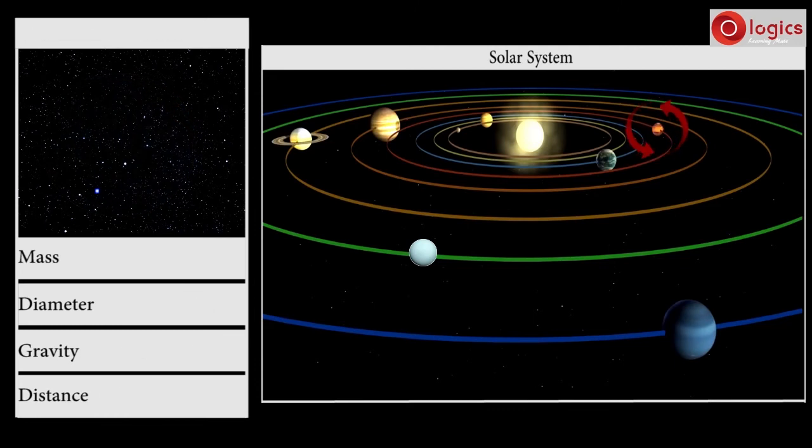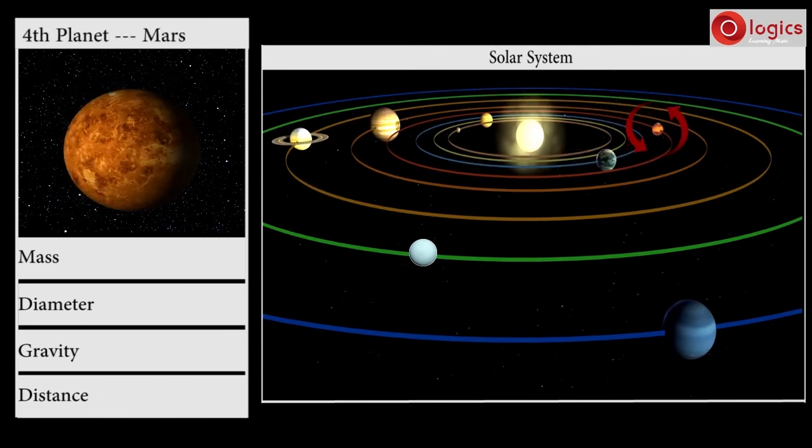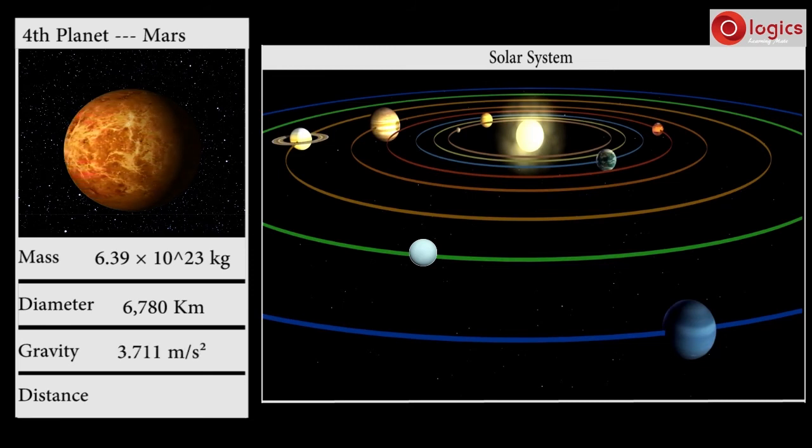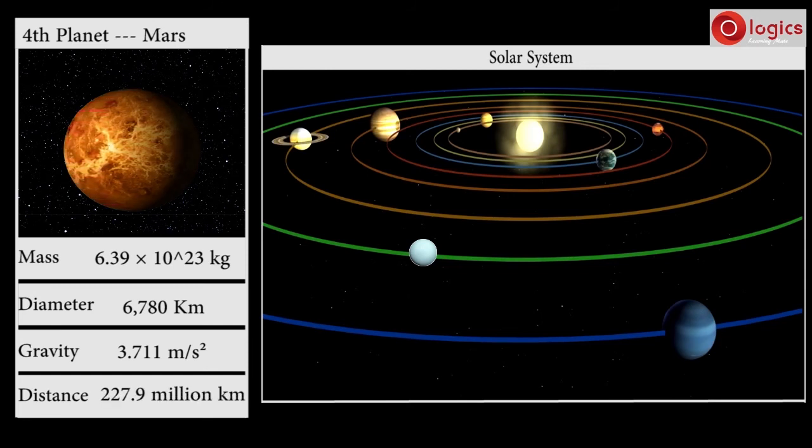The fourth planet in the solar system is Mars. Its mass is 6.39 × 10^23 kilograms. Mars' diameter is 6,780 kilometers. Gravity on Mars is 3.711 meters per second squared, and Mars is 227.9 million kilometers away from the Sun.